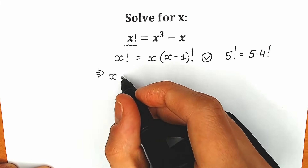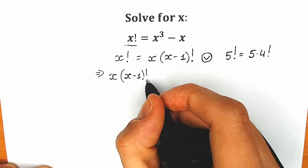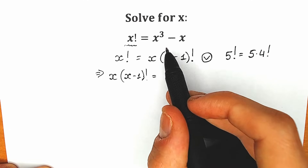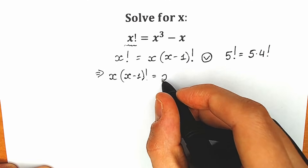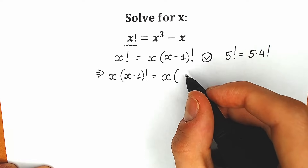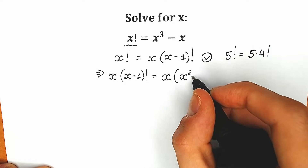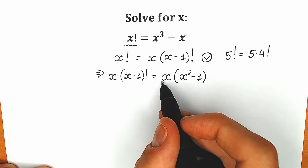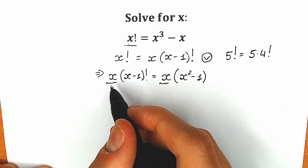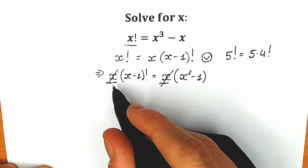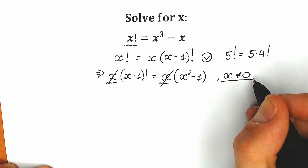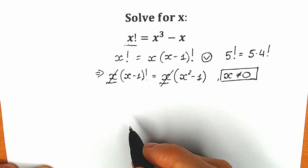As a result, we have x times (x-1) factorial on the left side. On the right side, we factor out x from x cubed minus x, giving x times (x squared minus 1). We can see x appears on both sides, so we can cancel it — but don't forget: when we cancel by x, we must note that x is not equal to 0.